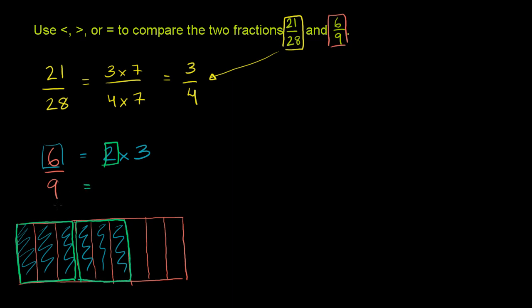Now what is 9 equivalent to? 9 is equivalent to 3 times 3, or 3 groups of 3. So 9 is equivalent to, that's 1 group of 3, that is 2 groups of 3, and now this is 3 groups of 3.